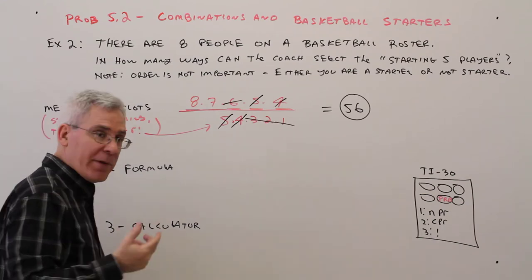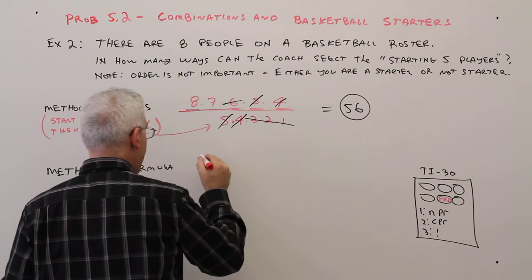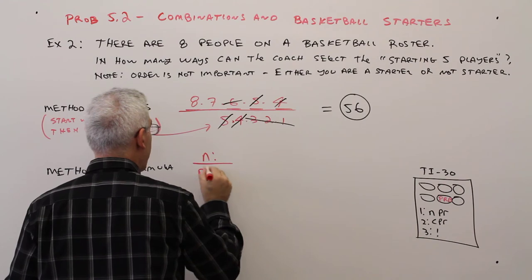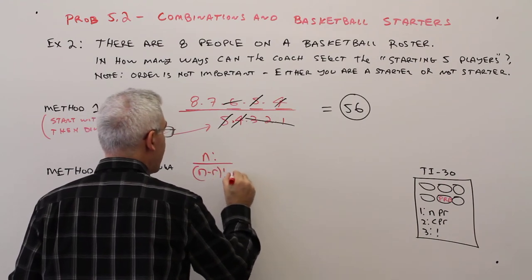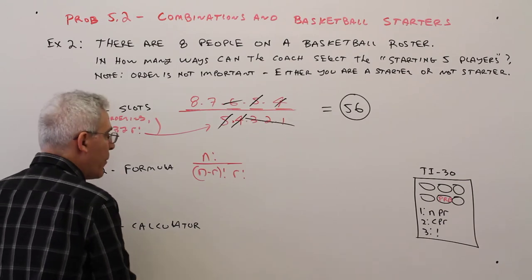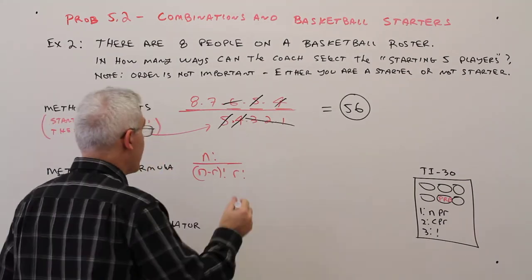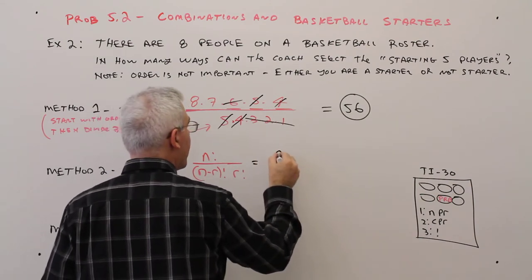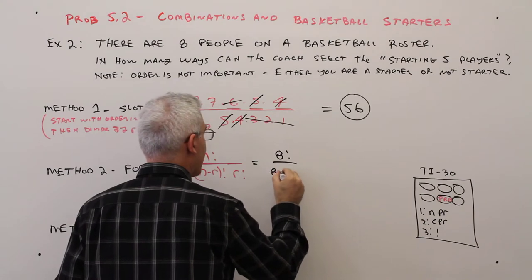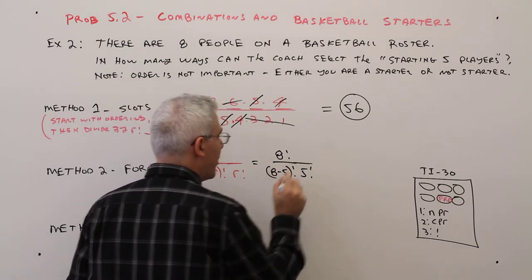Alright, method 2 would be with the formula. So the formula, I could write as n factorial over n minus r factorial, with an extra factorial down there. Remember, n is the total objects, r is the grouping size. So that would be total 8 factorial over 8 minus 5 factorial, and that would be 5 factorial.